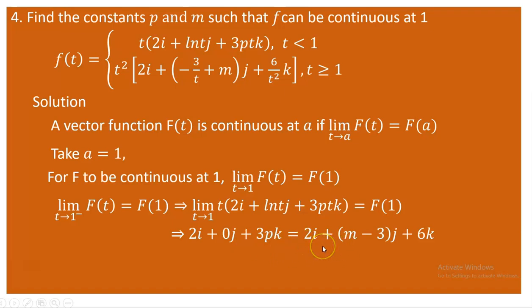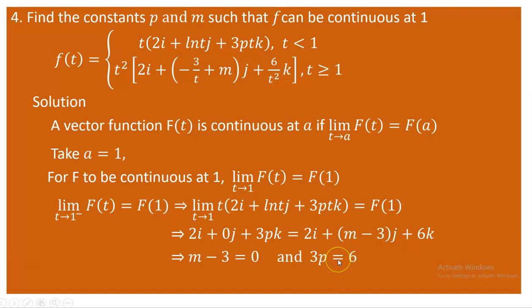The x components are identical. For these two vectors to be the same, the y components must match: m minus 3 must equal 0. And the z component: 3p must equal 6. So we obtain m minus 3 equals 0 and 3p equals 6, giving us m equals 3 and p equals 2. When m is 3 and p is 2, the piecewise function f of t is continuous at t equals 1.